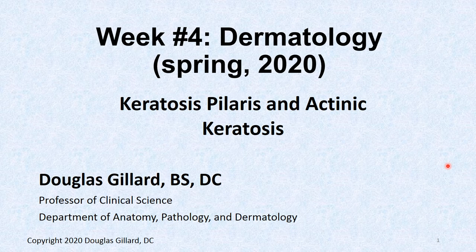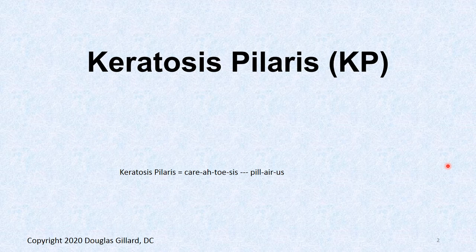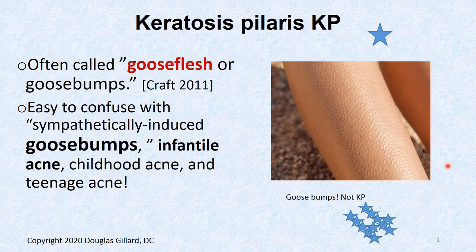You've probably never heard these words before in your life, but I guarantee you once we go through these, you're going to go, 'Oh yeah, that's what that is.' So let's see what it is. We'll start with KP, keratosis pilaris. And it looks like goose bumps, doesn't it? And that's what it is. It's often called goose flesh or goose bumps.